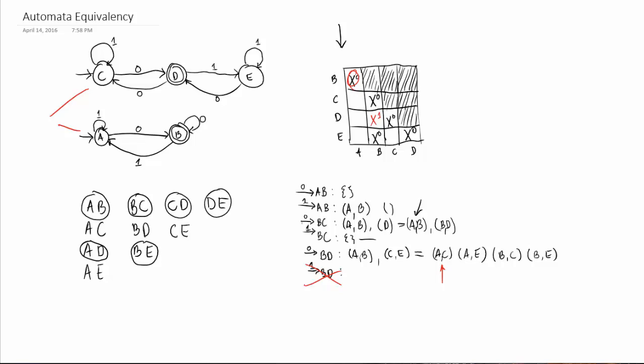Remember, these two automatons do not accept the same language. So, we can put an X in A and C. And that will be two. Because we're on our second step here. Remember, we got B and D from our first step. And now, we're on A and C, so it's X2.